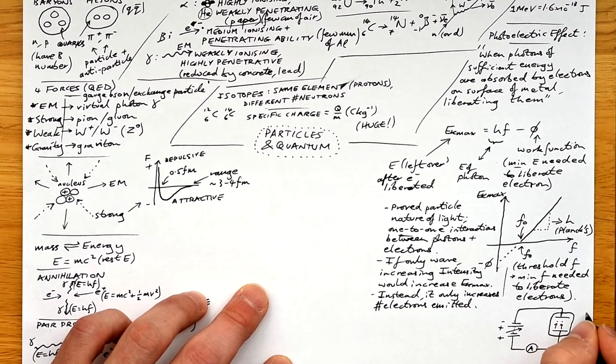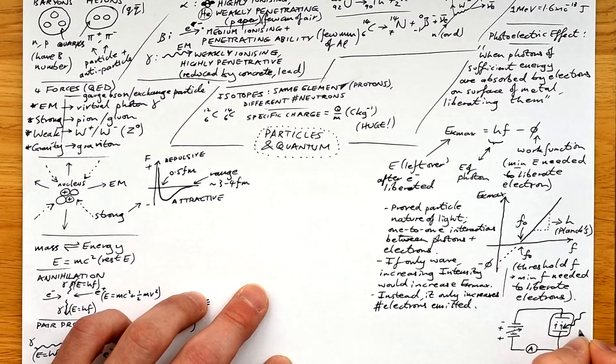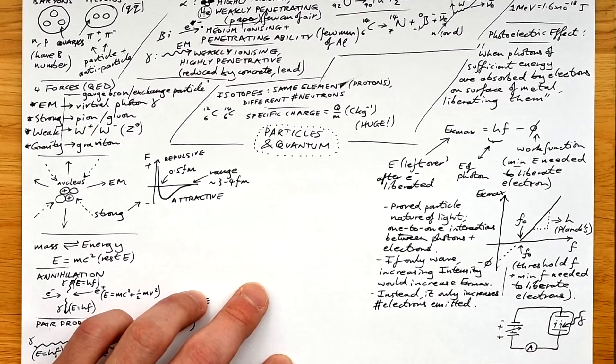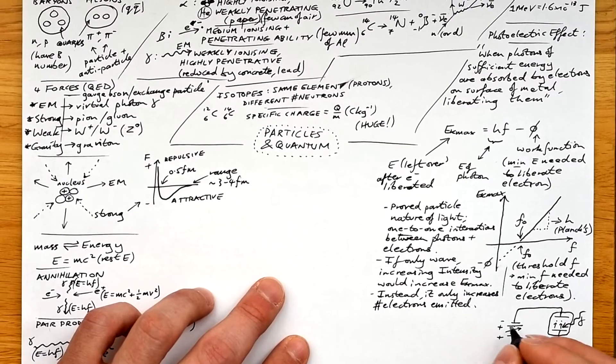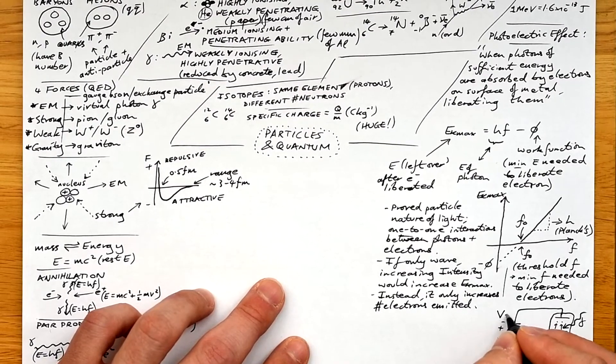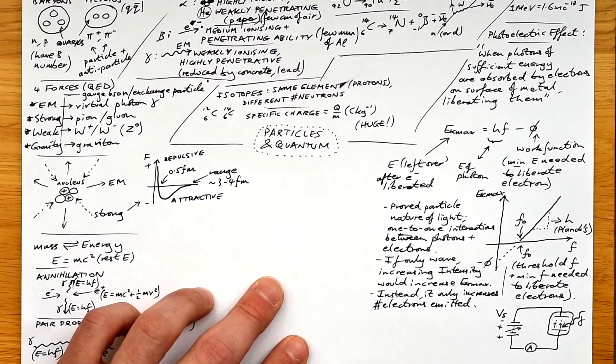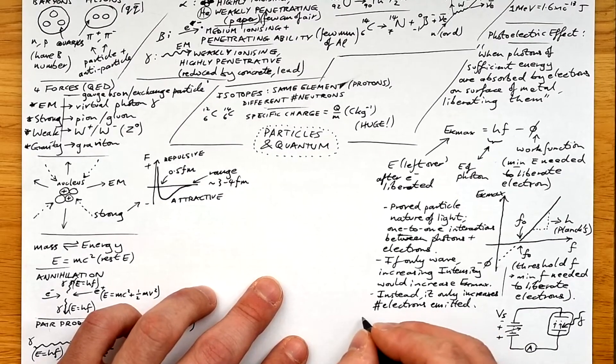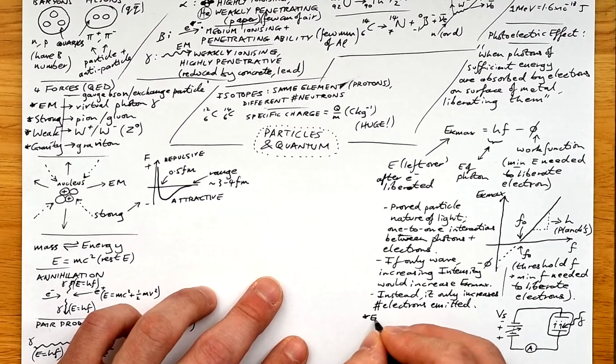Okay, so here's a circuit that we can use to measure the kinetic energy of these electrons. We have a variable PD applied across these two plates. We shine light on one of them, specifically the anode,